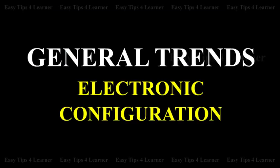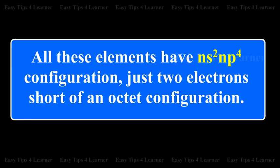General Trends — Electronic Configuration. All of these elements have an NS² NP⁴ configuration, just two electrons short of an octet configuration.